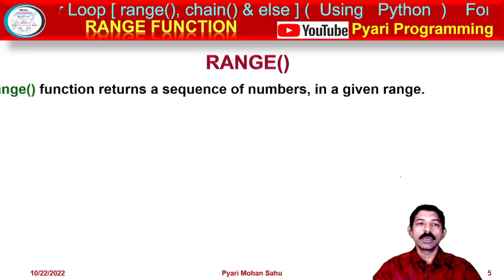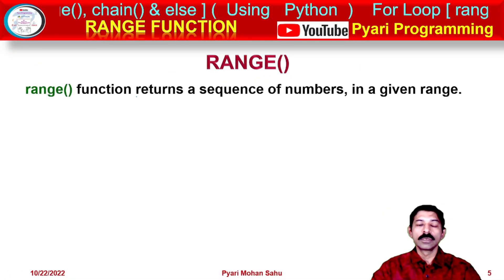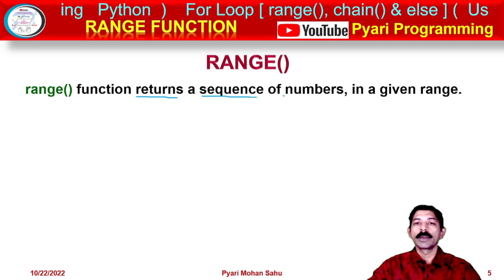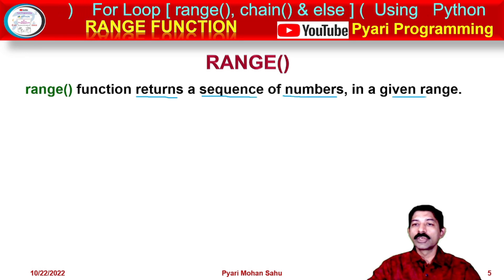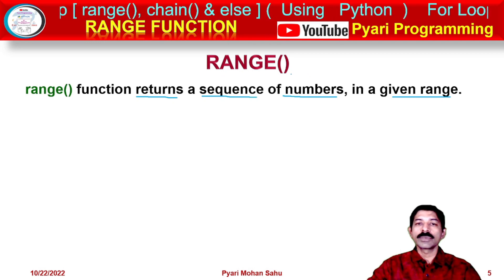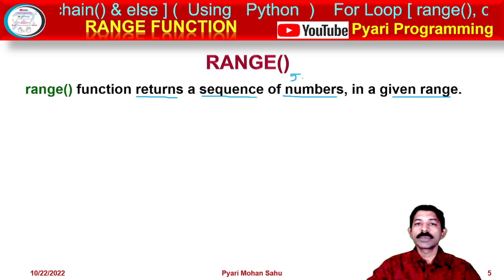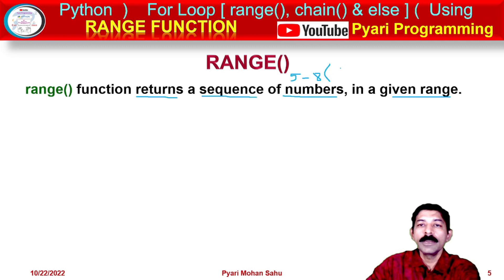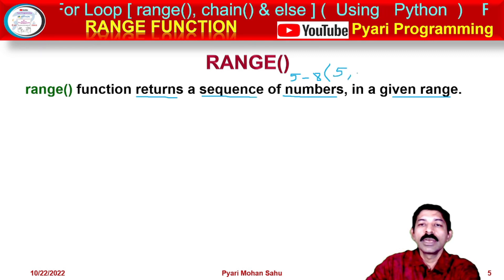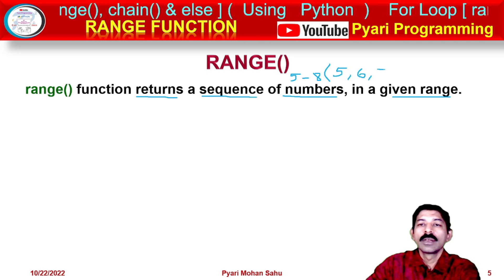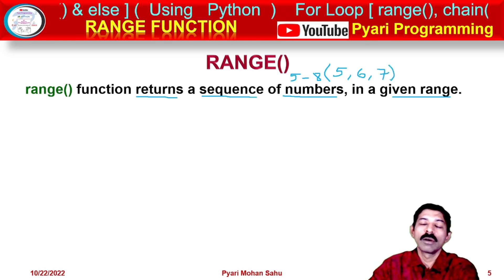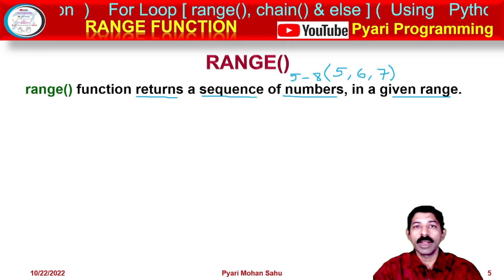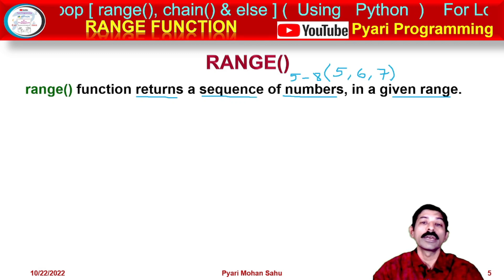Now we will discuss the range function. It returns a sequence of numbers in a given range. For example, if I say range(5, 8), it returns 5, 6, 7 — not 8, because the stop value is excluded. The range function returns an immutable sequence, meaning the elements cannot be changed. It can be easily converted to a list, tuple, or set.